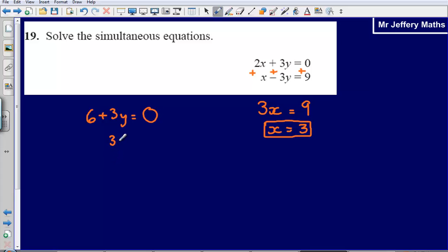So solving this equation, what I can then say is that 3y is equal to negative 6. And so then y must be equal to negative 6 divided by 3, negative 2. So x equals 3, y equals negative 2.